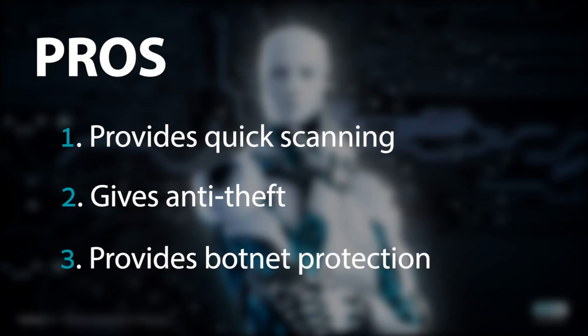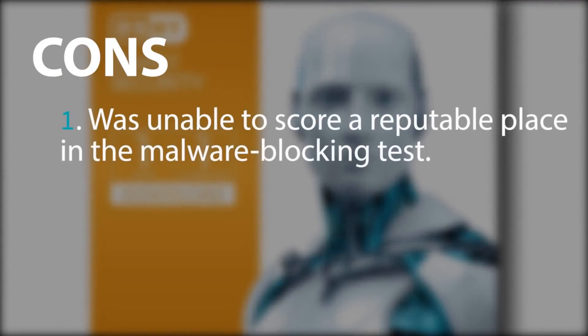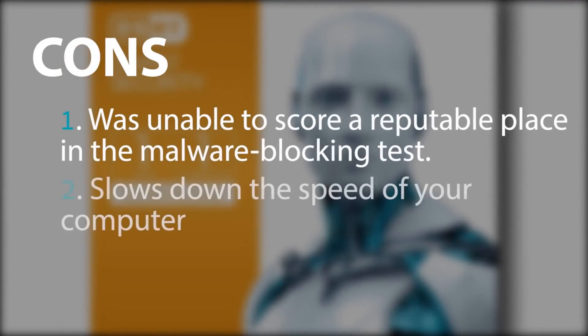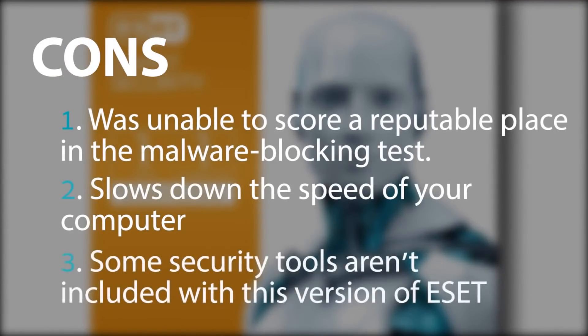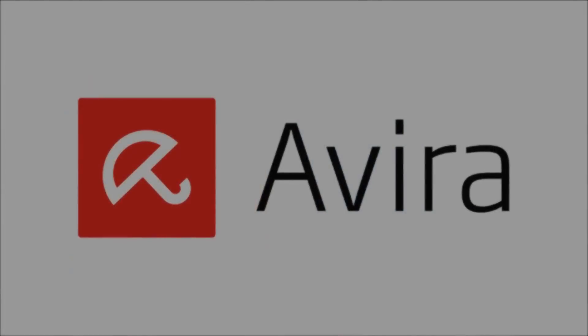Number 4 provides botnet protection, but was unable to score a reputable place in the malware blocking test and slows down the speed of your computer. Some security tools aren't included with this version of ESET.